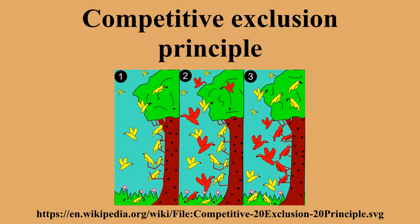Gause used two species of Paramecium, P. aurelia and P. caudatum. The conditions were to add fresh water every day and input a constant flow of food. Although P. caudatum initially dominated, P. aurelia recovered and subsequently drove P. caudatum extinct via exploitative resource competition.